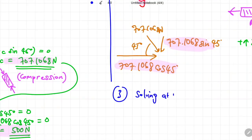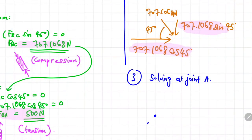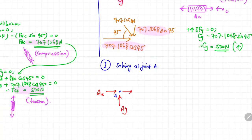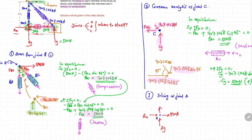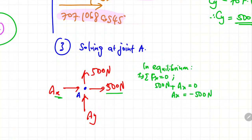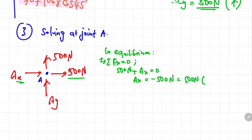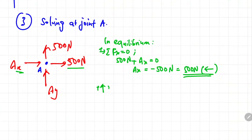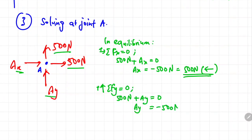Now we find the remaining unknown forces at joint A. Drawing the free body diagram at joint A and applying equilibrium conditions, we get Ax = 500 Newton pointing to the left and Ay = 500 Newton pointing downward.